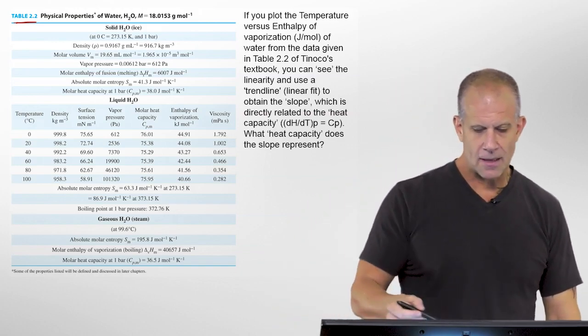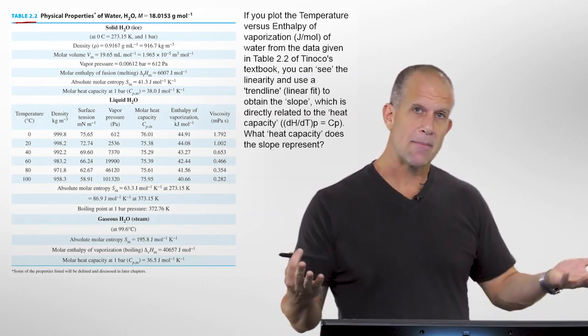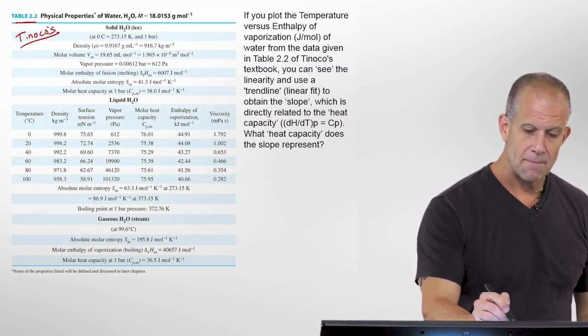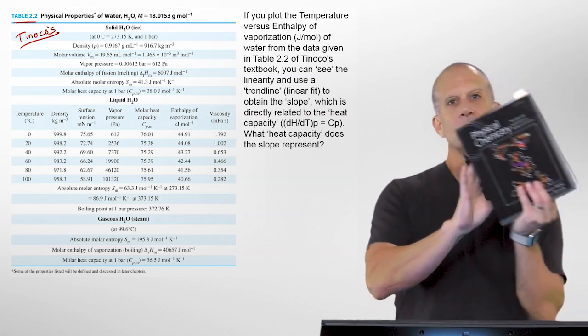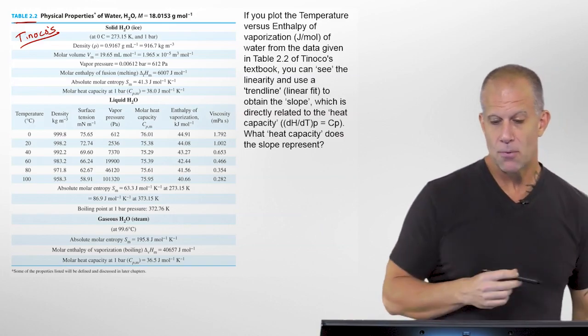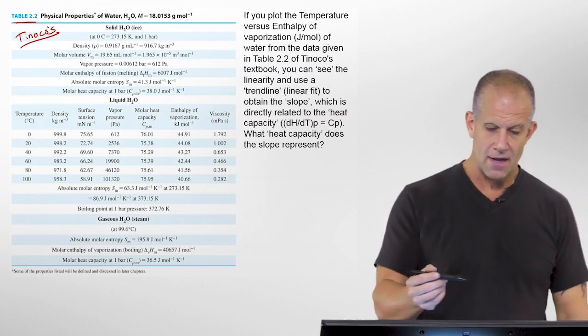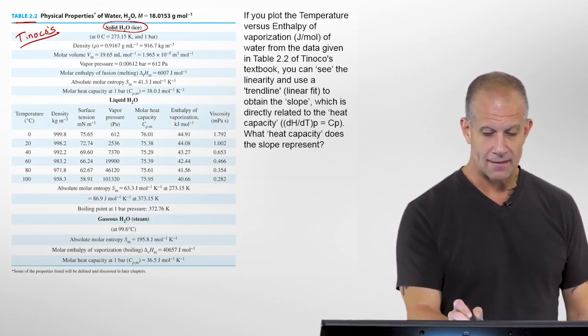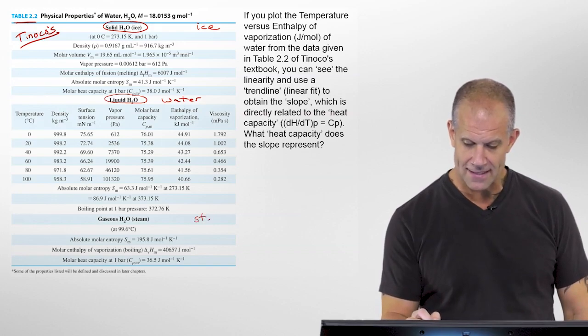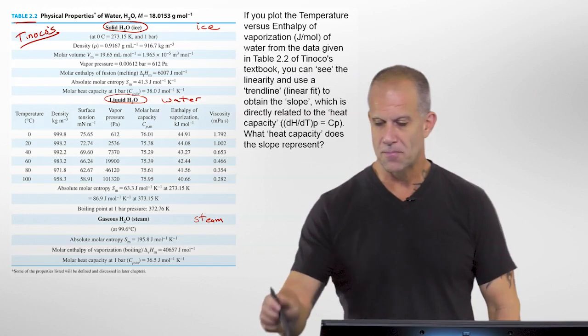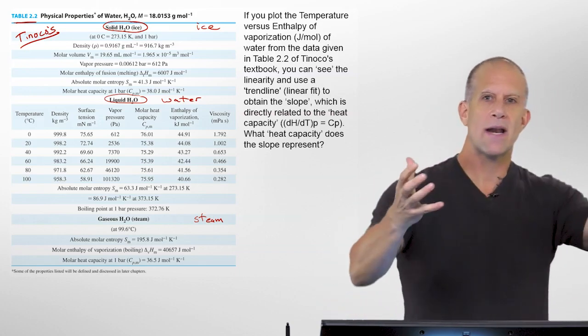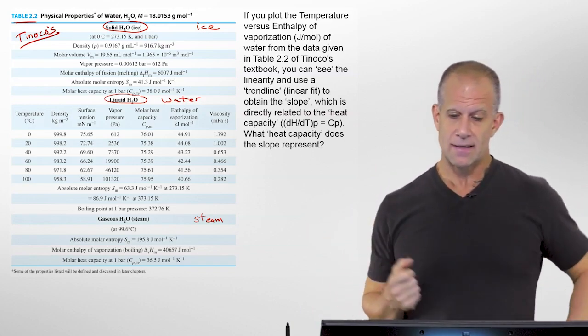This is summarizing some of the key thermodynamic or physical properties of water, and this comes out of Tinoco's book, specifically Tinoco's Physical Chemistry Principles and Applications in the Biological Sciences Edition 5, Table 2.2. It's telling you the physical properties of solid water, ice, liquid water, and vapor or steam. It's so useful because when we're often calculating physical chemistry problems or looking at phase changes, it's often in aqueous systems or with water directly.